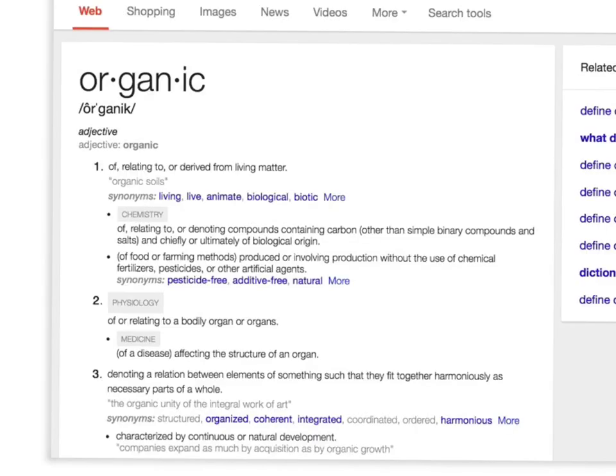So what does organic mean? Well, according to Webster or Google, organic relates to or is derived from living matter. In chemistry, we say denoting compounds containing carbon. So we're going to look at things containing carbon. They are all chiefly from biological origin, produced from living things.